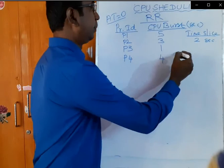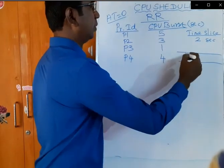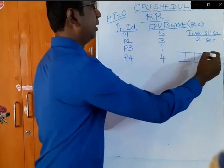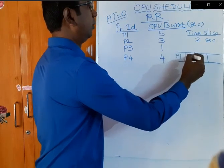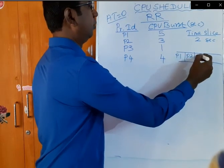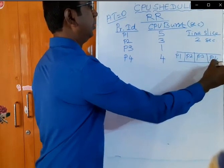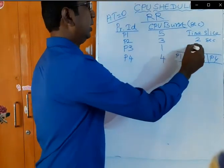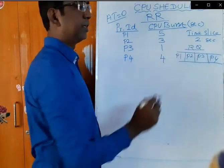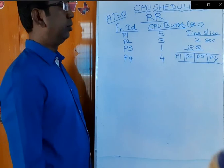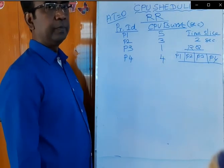At any given time, the processes are available in the ready queue in this order: P1, P2, P3, and P4.